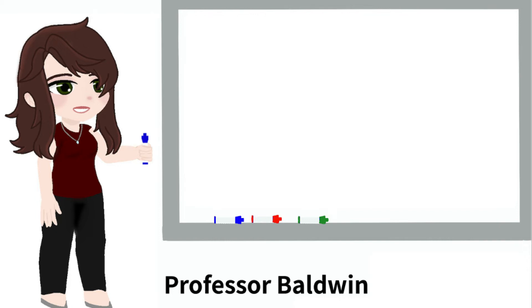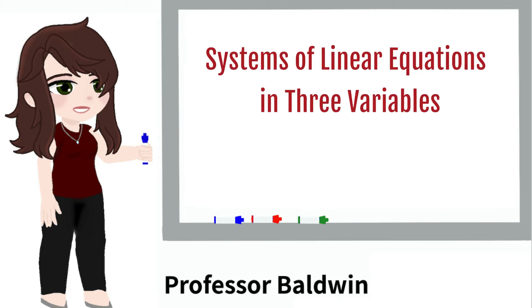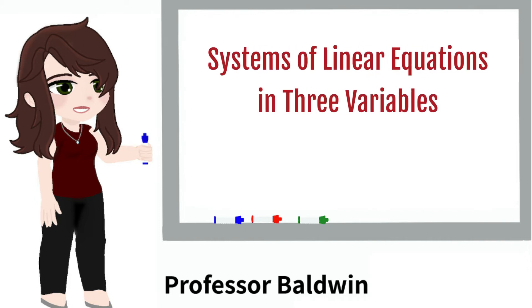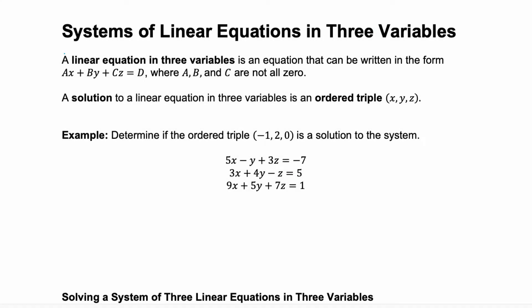Hi, I'm Professor Baldwin, and today I'm going to teach you about systems of linear equations in three variables. A linear equation in three variables is an equation that you can write in the form ax plus by plus cz equals d, where a, b, and c are not all zero. A solution to a linear equation in three variables is called an ordered triple, and it'll look like the point (x, y, z).